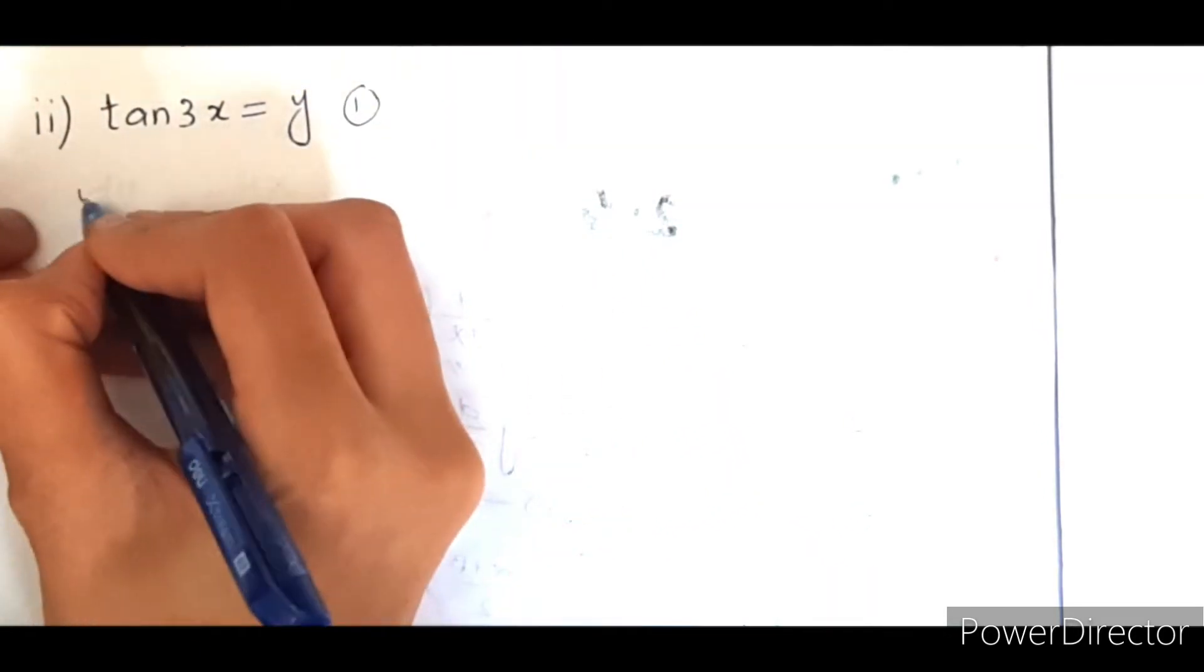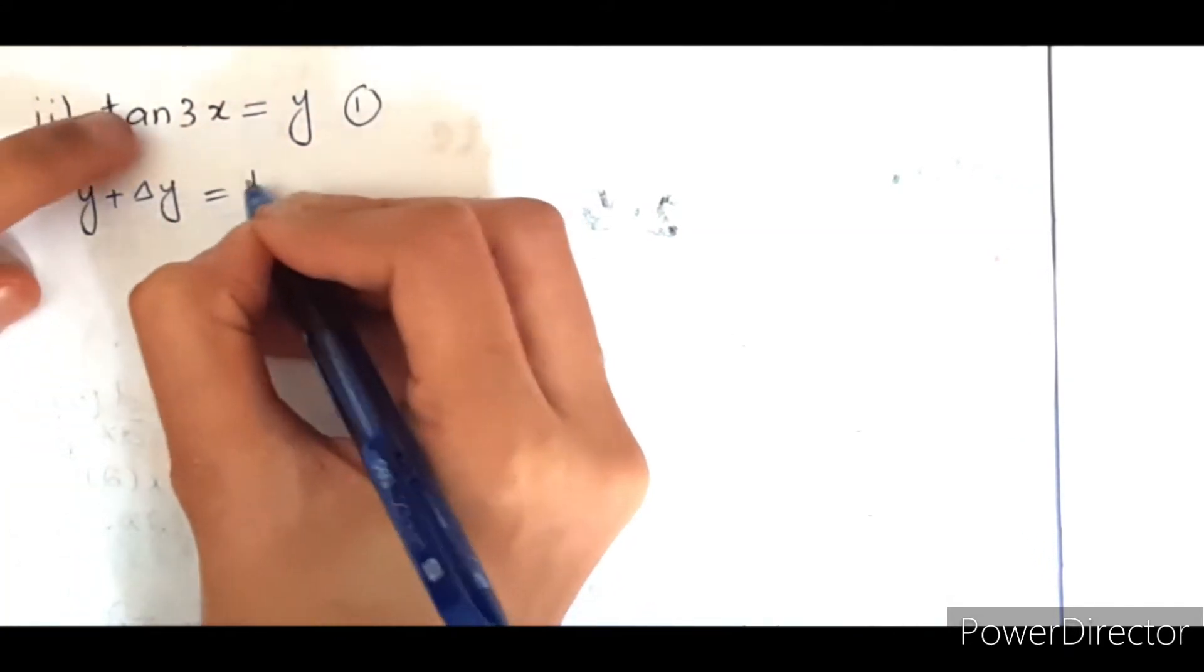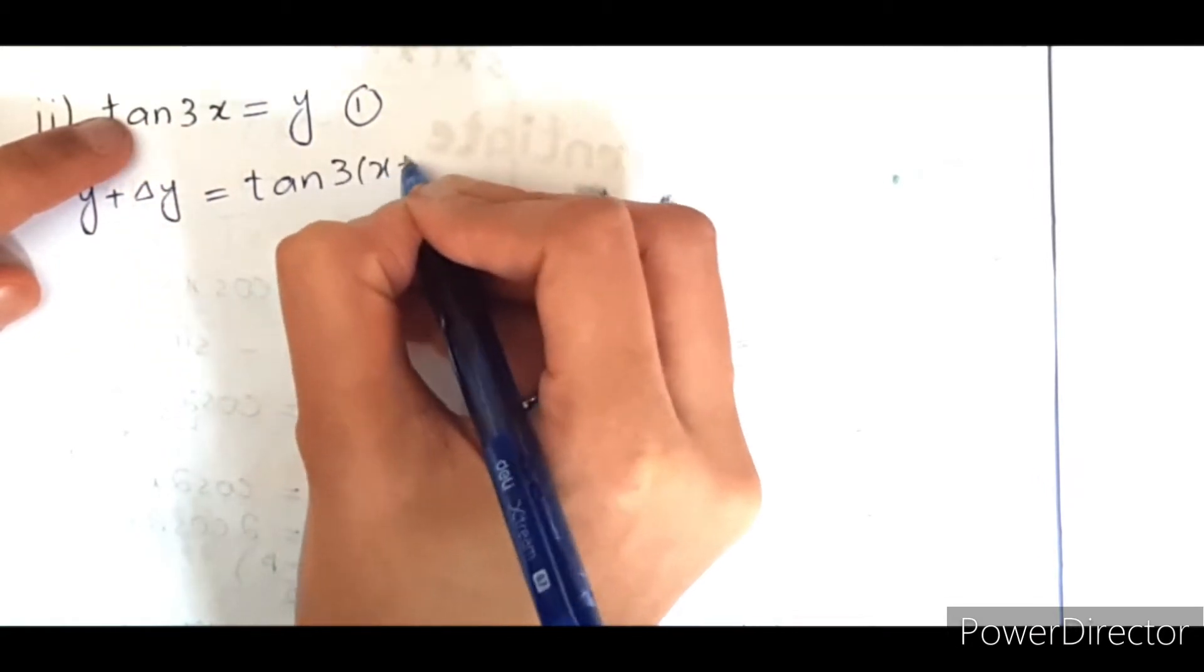Then adding increment on both sides will be tangent 3x plus del x.